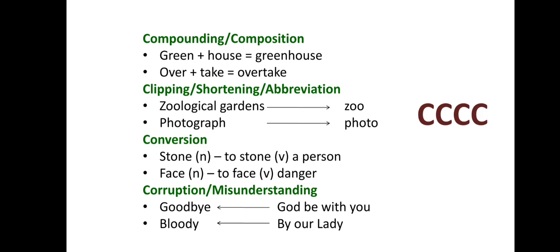The next one is Clipping or Shortening. Clipped words are essentially shortened forms of words that are frequently used in conversation and hurried speech, clipped of one or more syllables. For example, 'Zoological Garden' is clipped to 'zoo,' and 'photography' is clipped to 'photo.' That is clipping.